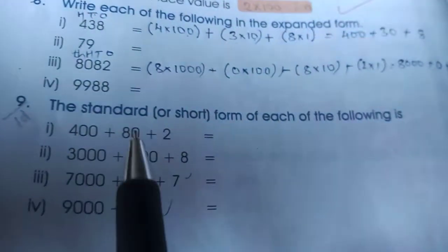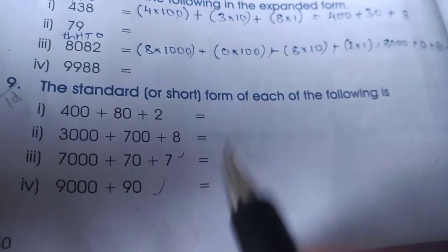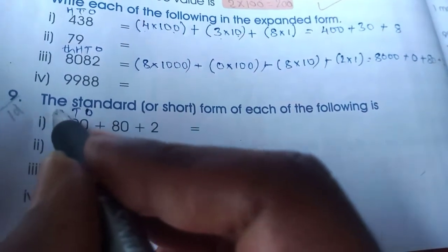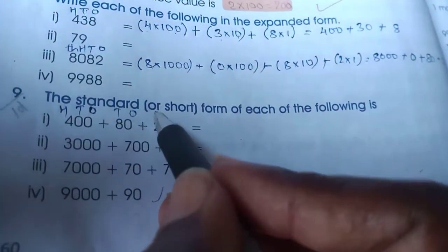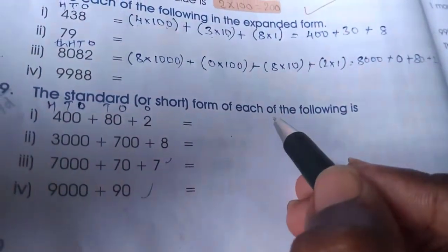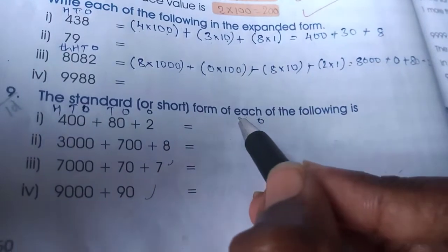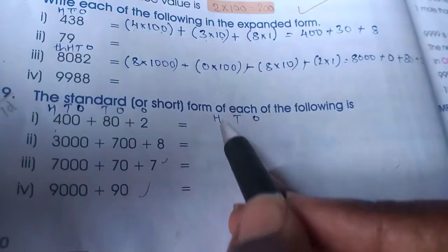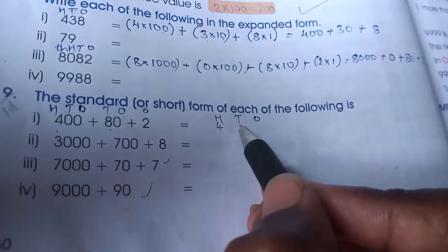You can see here the standard or short form is also very simple. First write the place values: ones, tens, hundreds. Now here what you have to do, write the place value. What is the highest place value? 100. So write up to 100: ones, tens, hundreds. Now in 100 place, 4 is there, means 100 place, 4 you write. 10 place, 8 is there, so you write 8.